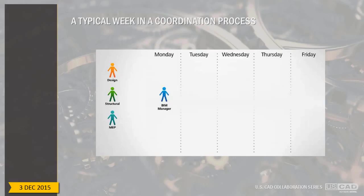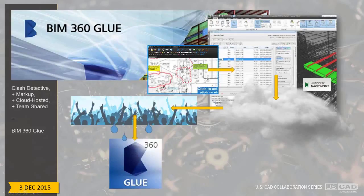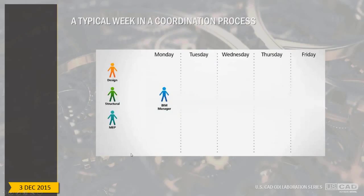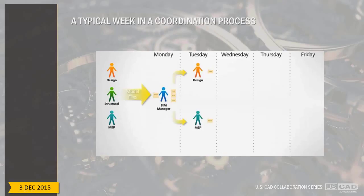Let's look at a typical week in a coordination process. In typical scenarios, you have your BIM manager dedicated by the team, and the other disciplines on the side. At some point they throw all their information at the BIM manager, who collects, processes, and distributes it to the appropriate members. Right there are already two opportunities for information loss — the disciplines might have missed something, and that person might have misinterpreted what the next person needs.